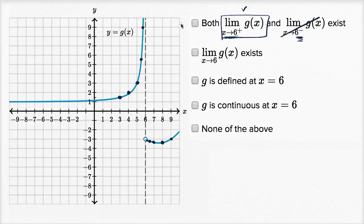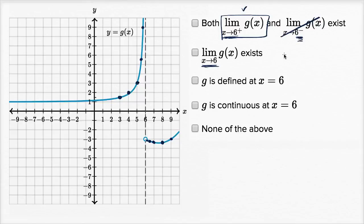So technically we would say this left-hand limit does not exist. Some people will say the limit is approaching infinity, but infinity is not a value you can say it is approaching in the classical formal definition of a limit. So for these purposes, we say this does not exist. Therefore, the overall limit as x approaches six of g of x also does not exist, because the left-hand limit does not even exist.